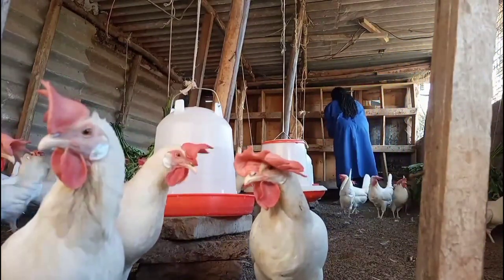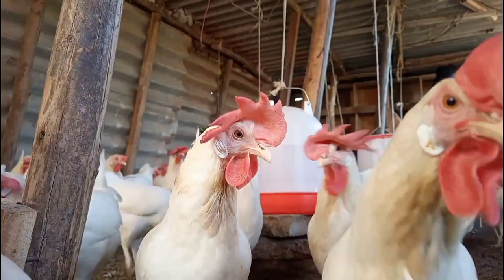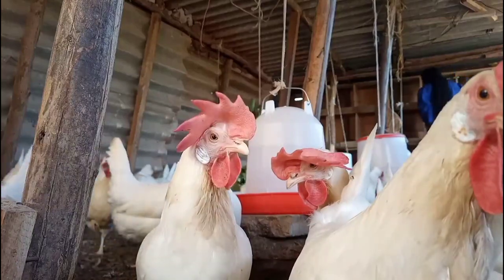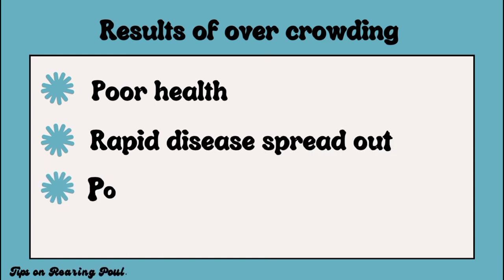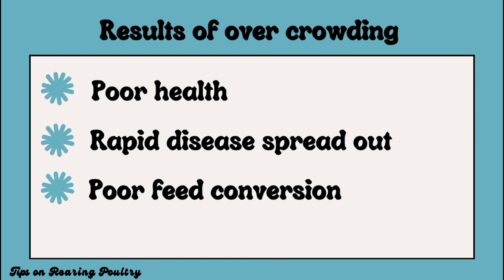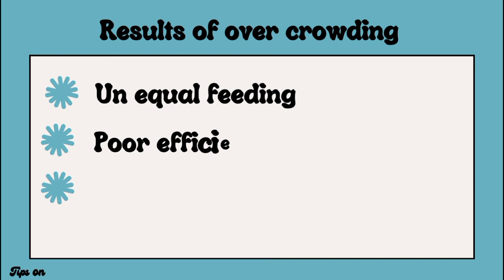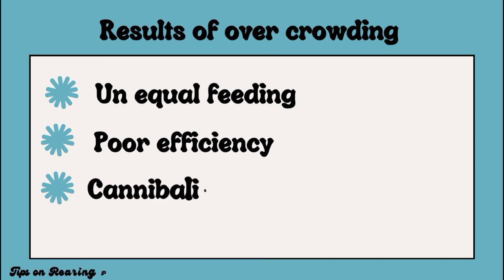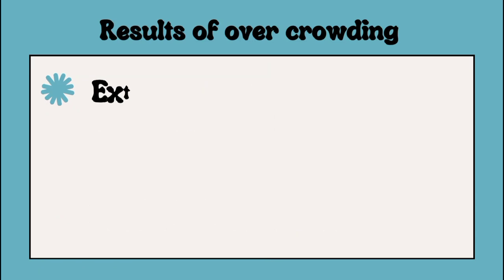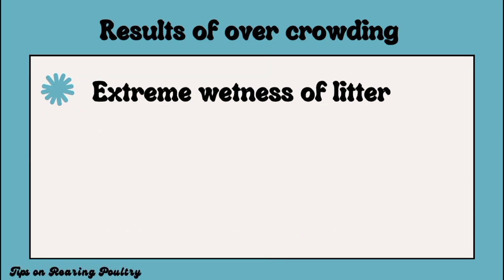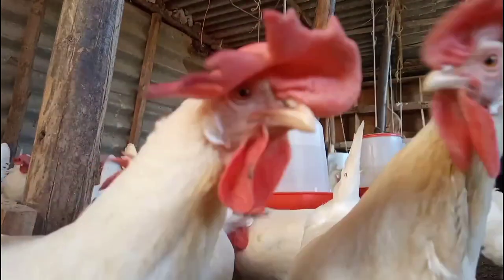This eventually causes poor production or yields, and the same applies to broiler birds because broilers do not perform well in an overcrowded house. When preparing for your poultry birds' arrival, always aim to avoid overcrowding because it leads to: poor health, rapid disease spread, poor feed conversion due to competition, stunted growth, poor egg production efficiency, cannibalism, excessive heat stress — which is one of the most common things that kills broilers — and extreme wetness of the litter causing a smelly house due to ammonia build-up.